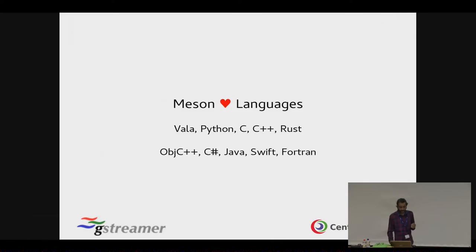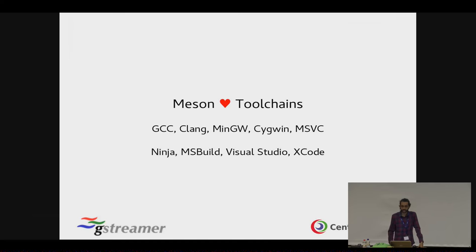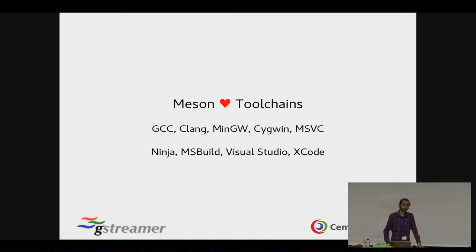Meson has a lot of language support: Vala, Python, C, C++, Rust. If you have a language you use, send a pull request or open a bug and we'll add support. It also supports a lot of toolchains: GCC, Clang, MinGW — those are what AutoTools supports — and MSVC, which AutoTools cannot do unless you use weird wrappers. And there are three backends: Ninja, Visual Studio, and Xcode. Ninja is the default backend on Linux. You can also output Visual Studio project files, just like CMake.